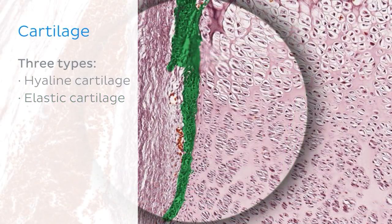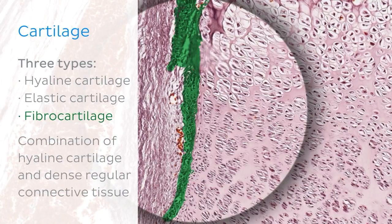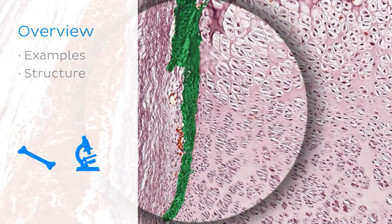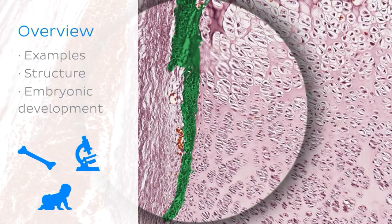Finally, the third type is known as fibrocartilage, which is the subject of this tutorial. Fibrocartilage is essentially a combination of hyaline cartilage and dense regular connective tissue, and one of its functions is to act as a cushion for bones in the body. In this tutorial, we will look at examples of where fibrocartilage is found in the body, examine its histological structure, and explore its role in embryonic development, including important clinical applications.